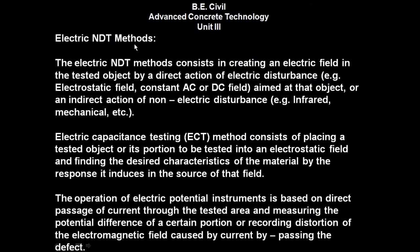Now we will see the Electric NDT Methods. The electric NDT methods consist of creating an electric field in the tested object by a direct action of electric disturbance — for example, electrostatic field, constant AC or DC field — aimed at that object, or an indirect action of non-electric disturbances such as infrared or mechanical. Electric capacitance testing (ECT) method consists of placing a tested object or its portion into an electrostatic field and finding the desired characteristics of the material by the response it induces in the source of that field. The electric potential instrument operates based on the direct passage of current through the tested area and measuring the potential difference of a certain portion, or recording distortion of the magnetic field caused by the current bypassing the defect.